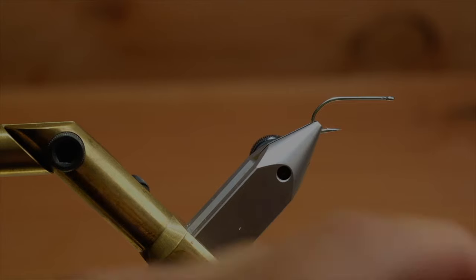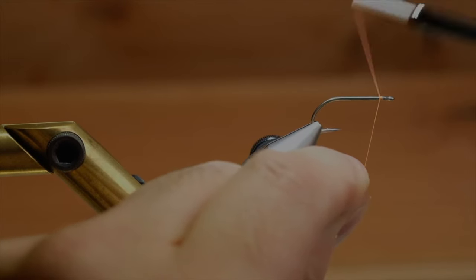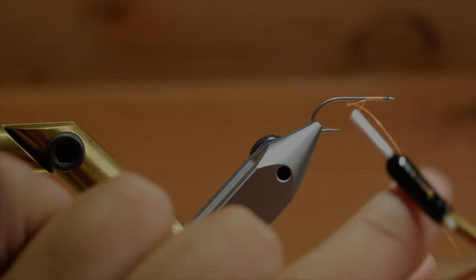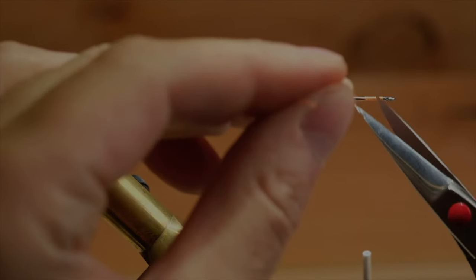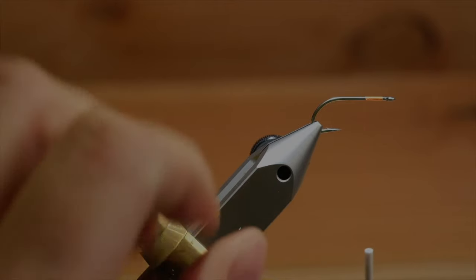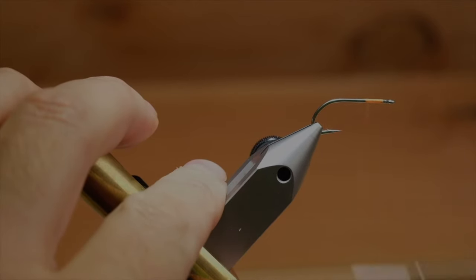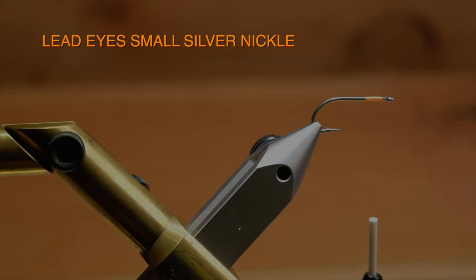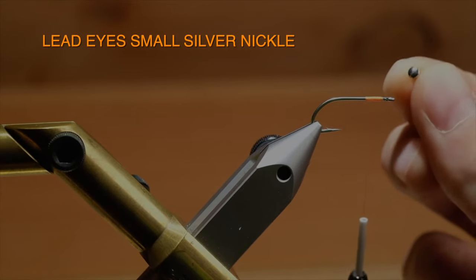Let me start off attaching my thread. Just a little base for the dumbbell eyes we're gonna tie on. I will go to the middle of my tying thread. I have about five millimeters on here. I like to tie it with really small lead eyes.